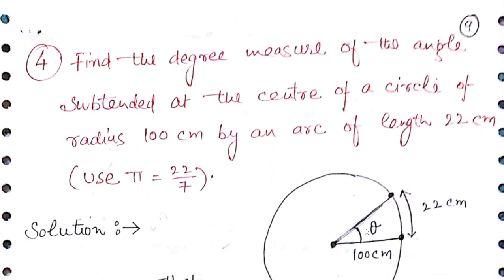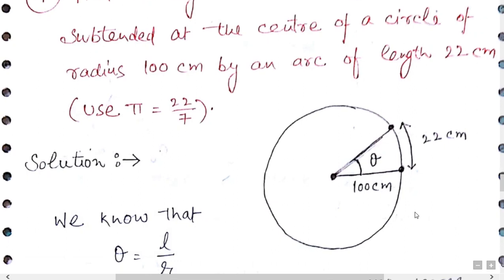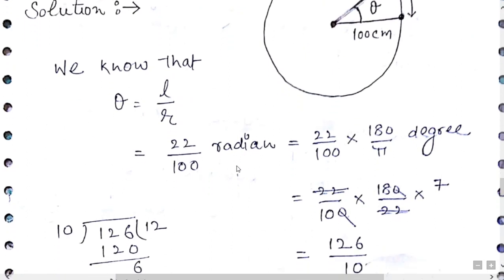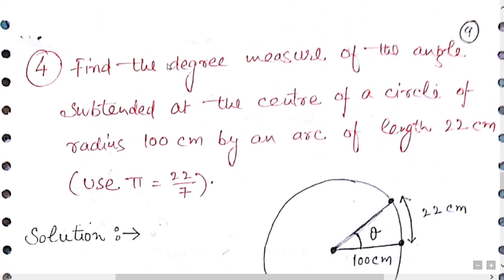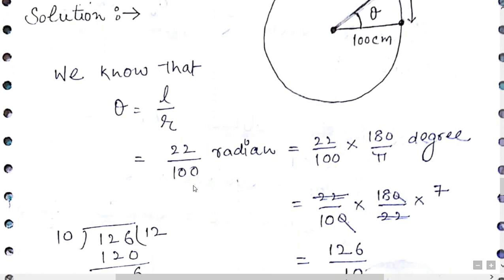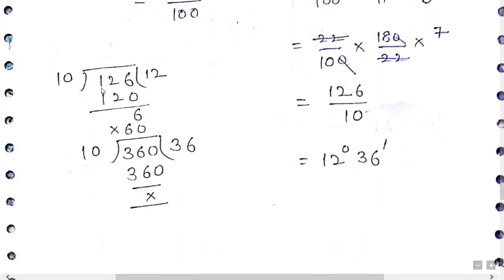Question number 4: Find the degree measure of the angle subtended at the center of a circle of radius 100 cm by an arc of length 22 cm. Apply θ = l/r, giving 22/100 radian. Since the question asks for degree measure, multiply by 180/π, insert the value of π, and get 126/10. Convert this into degrees and minutes.